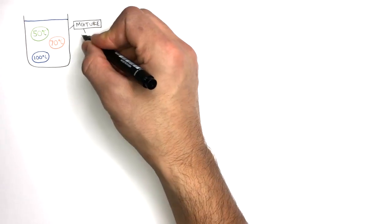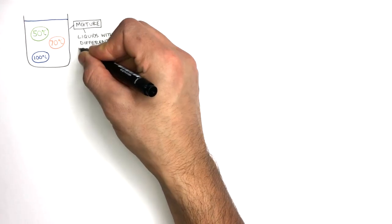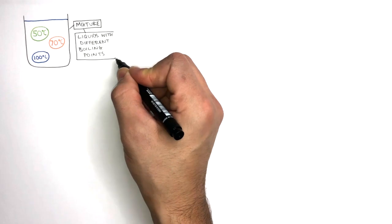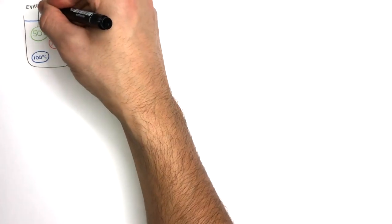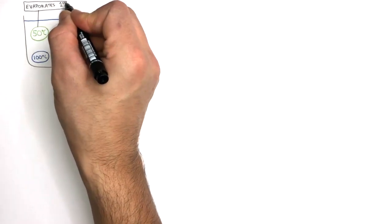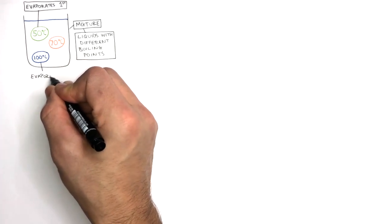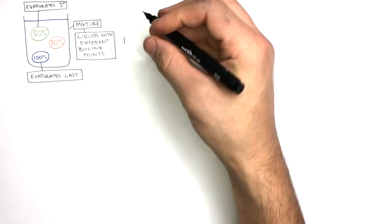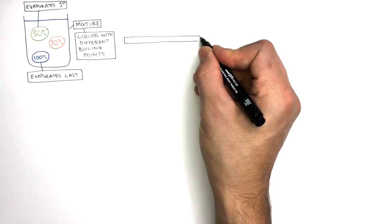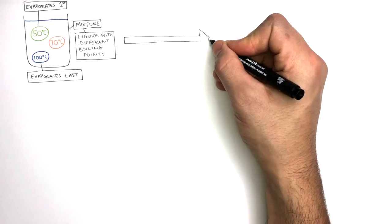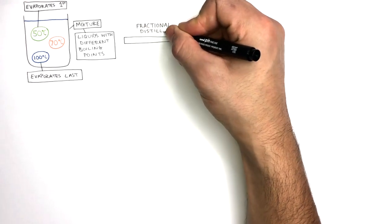Here is a mixture of three different liquids with different boiling points. The liquid with a boiling point of 50 degrees C will evaporate first, whereas the liquid with a boiling point of 100 degrees C will evaporate last. So to separate this mixture of liquids which have different boiling points, we use a separation technique called fractional distillation.